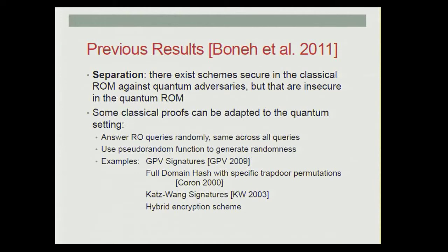Boneh et al. last year had some results in the quantum random oracle model. They showed that there is in fact a separation — there are schemes that are secure in the classical random oracle model even against quantum adversaries, but once we allow the quantum adversary to make quantum queries to the random oracle, the schemes are no longer secure. They show, however, that some classical proofs can be adapted to the quantum setting, basically just proofs where the random oracle is used in a very limited way. Examples include the GPV signature scheme, the full domain hash signature scheme for a specific type of trapdoor permutation, the Katz-Wang signature scheme, and a particular hybrid encryption scheme.